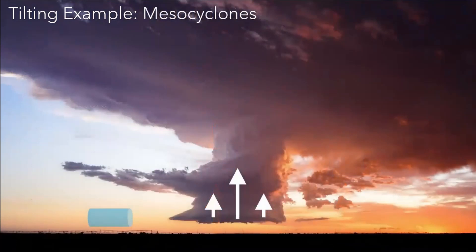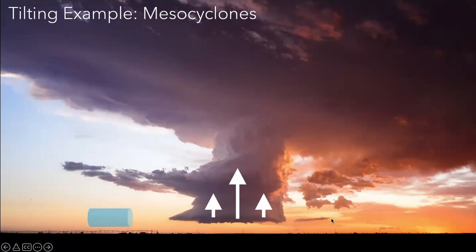The second example of tilting we're going to look at is mesocyclones — how do mesocyclones develop? What I have here is a situation where vorticity is coming in from left to right. These white arrows represent the updraft of the storm. You can see the updraft is strongest in the middle and then slowly tails off as you go to the edge, so we have a gradient in vertical velocity.